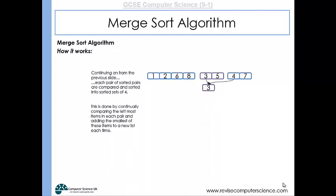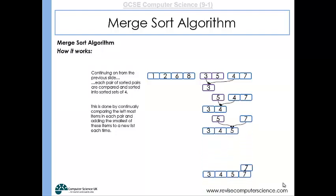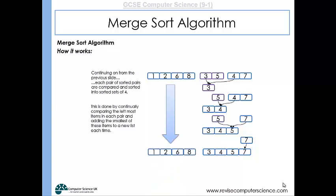The same happens with the next pair of pairs. The three and the four are compared and three is smaller, so it's positioned at the start of the new subarray. The four and the five are compared and four comes next. Then the five and the seven are compared, five is brought down, and then the seven fills the last space. So now we've got two sets of four, each set being in order.